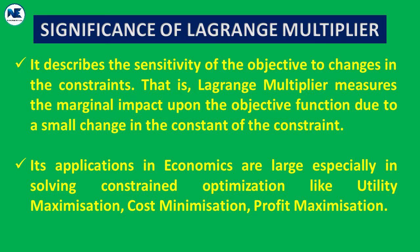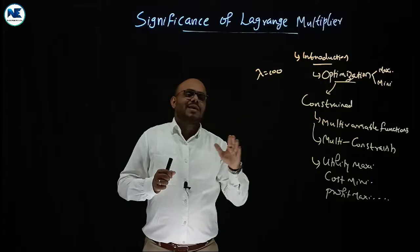When the lambda value is derived, it gives the marginal utility in the case of a utility function. The last point is that the Lagrange multiplier and its applications in economics are large, especially in solving constrained optimization like utility maximization, cost minimization, and profit maximization. Now we can wind up the session.